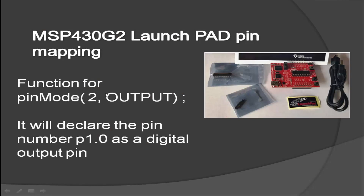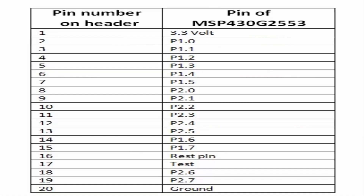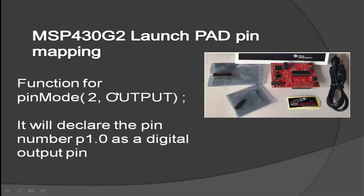For example, if you want to declare pin 1.0 as output in Energia IDE, you will use the pinMode function with two arguments: 2, where 2 is the pin number, and OUTPUT, declaring it as an output. You can use either output or input. This function will declare pin 1.0 as a digital output pin. You can simply use the pin number written on the board instead of using port names like P1.0 or P2.1.